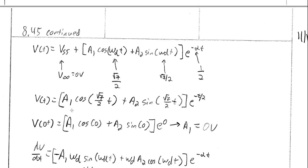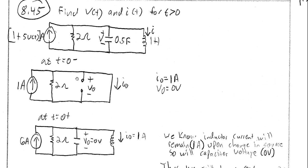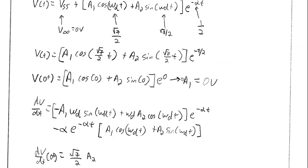To find A₁ and A₂, we start by plugging in t equals zero on the zero-plus side. Cosine of zero is one, sine of zero is zero, and e to the zero is one, so the expression reduces to just A₁. Since V(0) equals zero volts, we get A₁ equals zero. This means the cosine term drops out entirely from the expression for V(t).